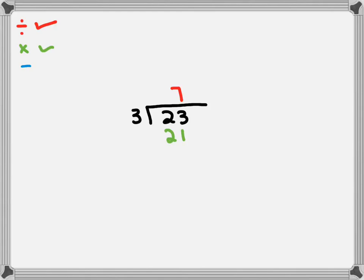Now our minus step, 23 minus 21. So three minus one is two, and two minus two is nothing. So that's remainder two. Next one.